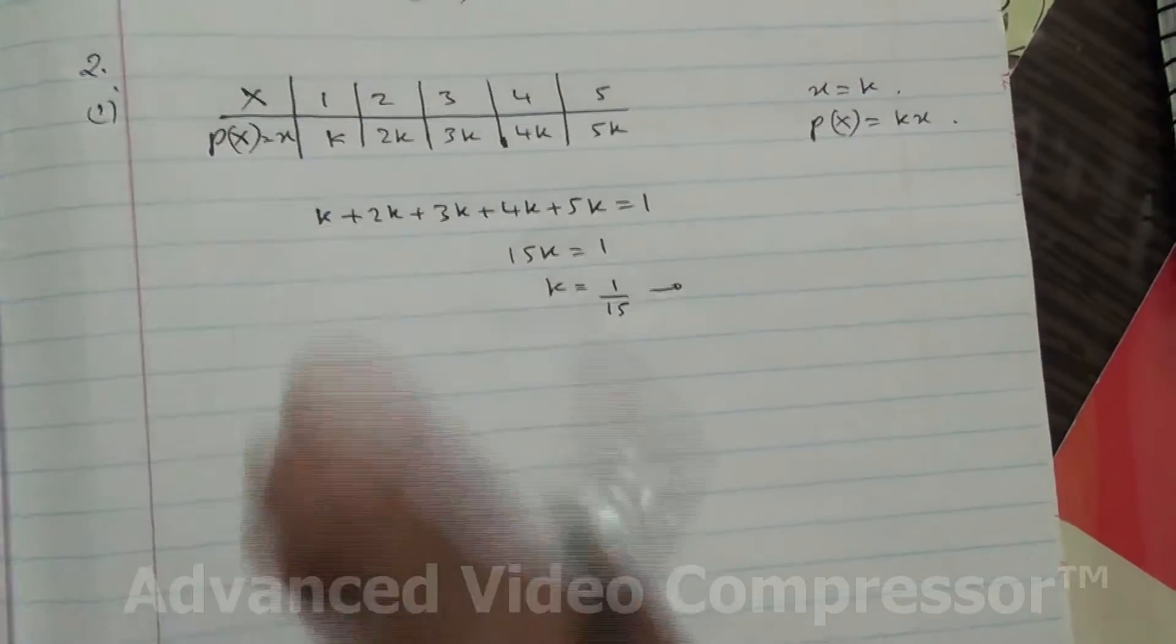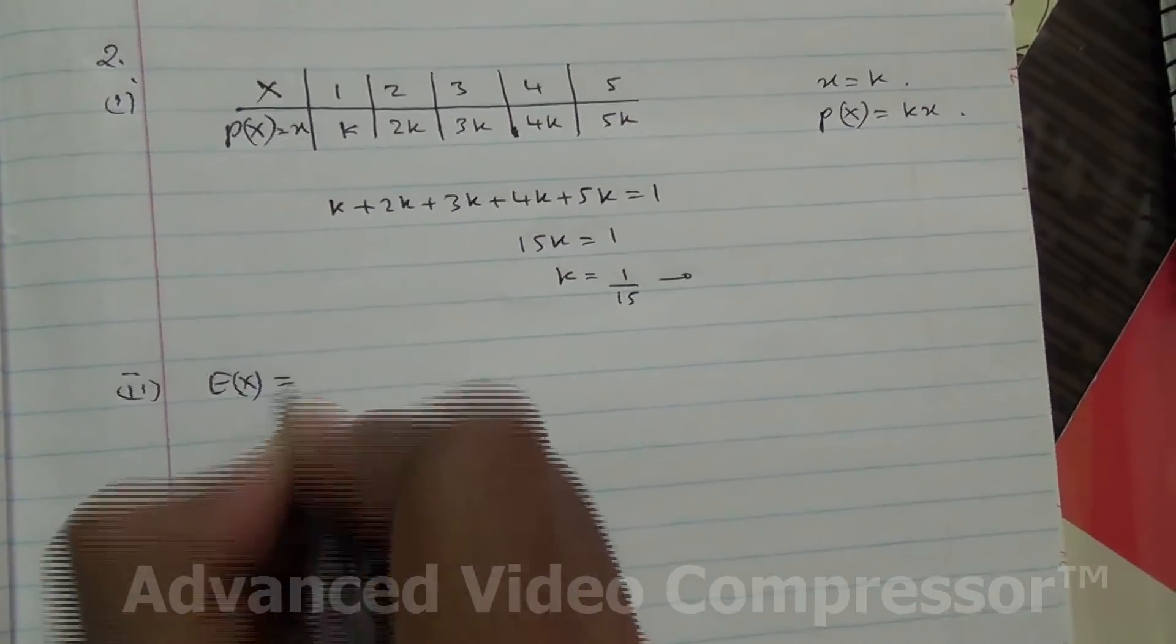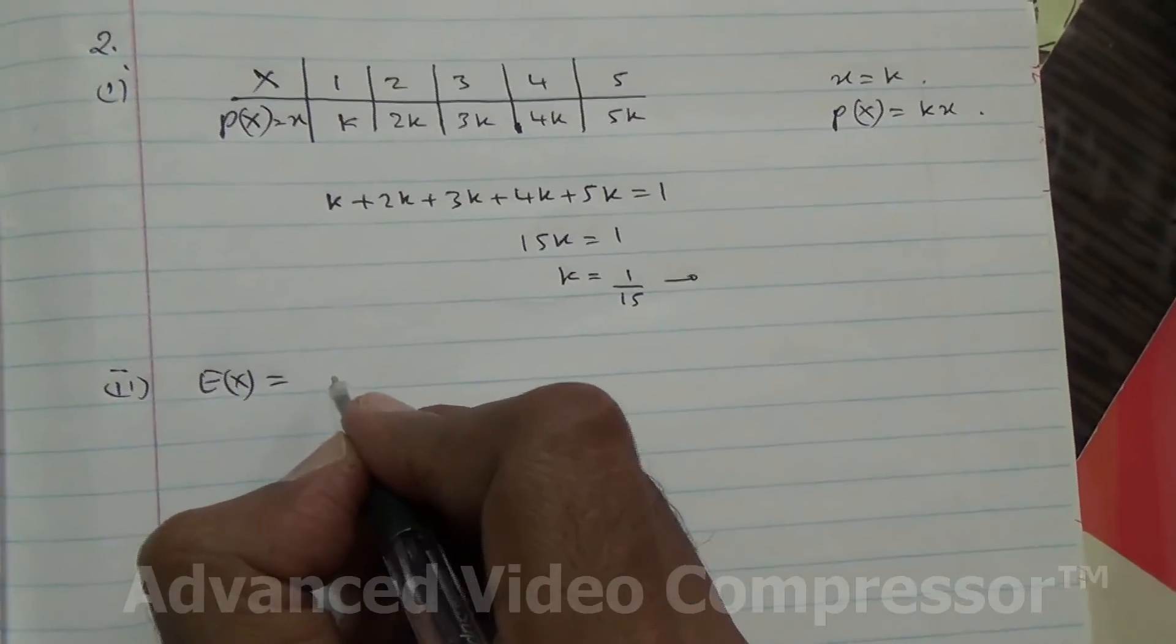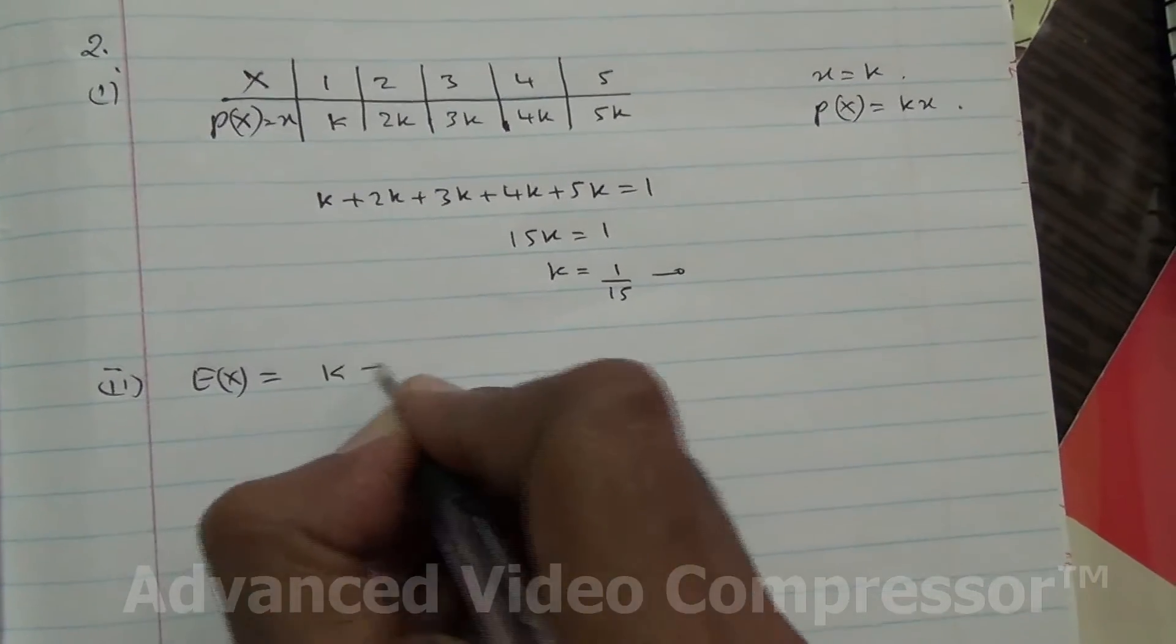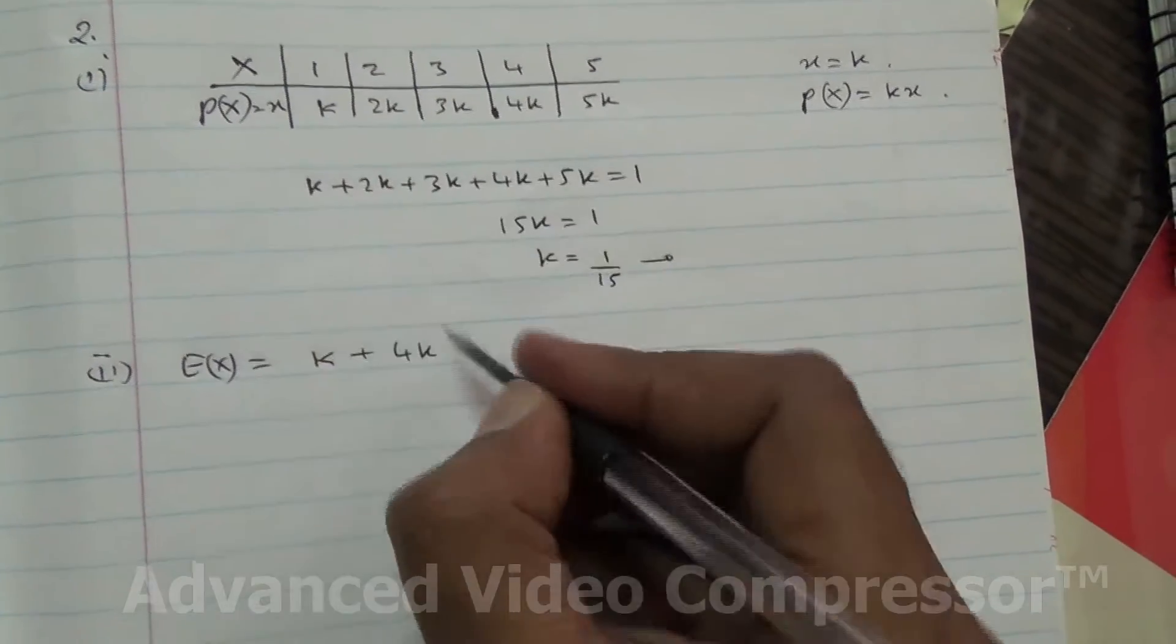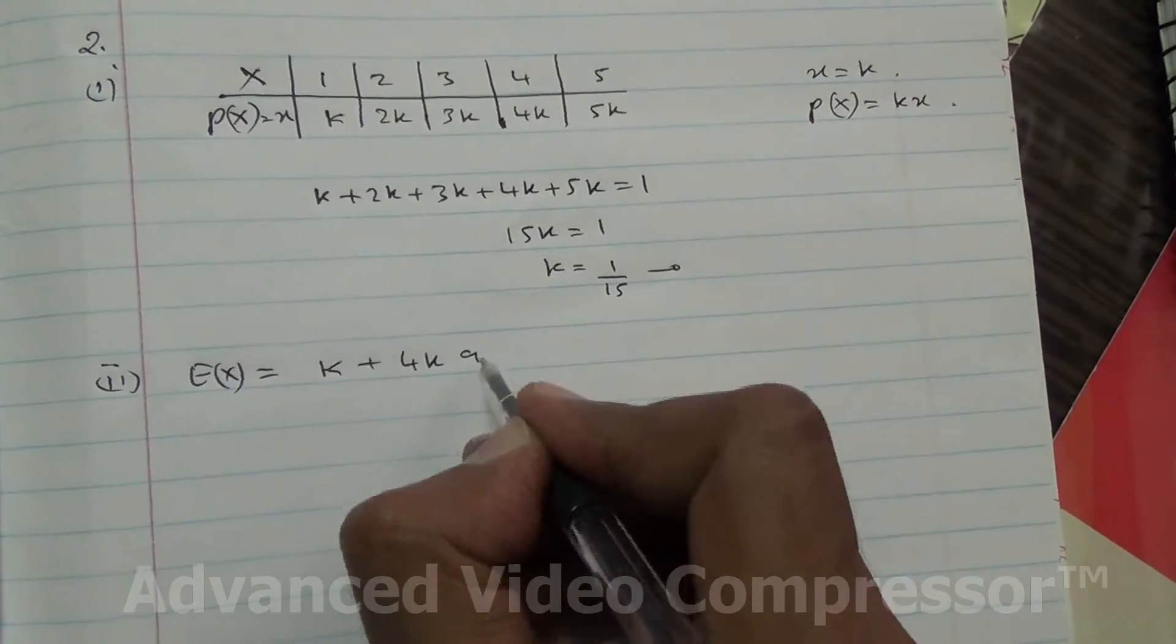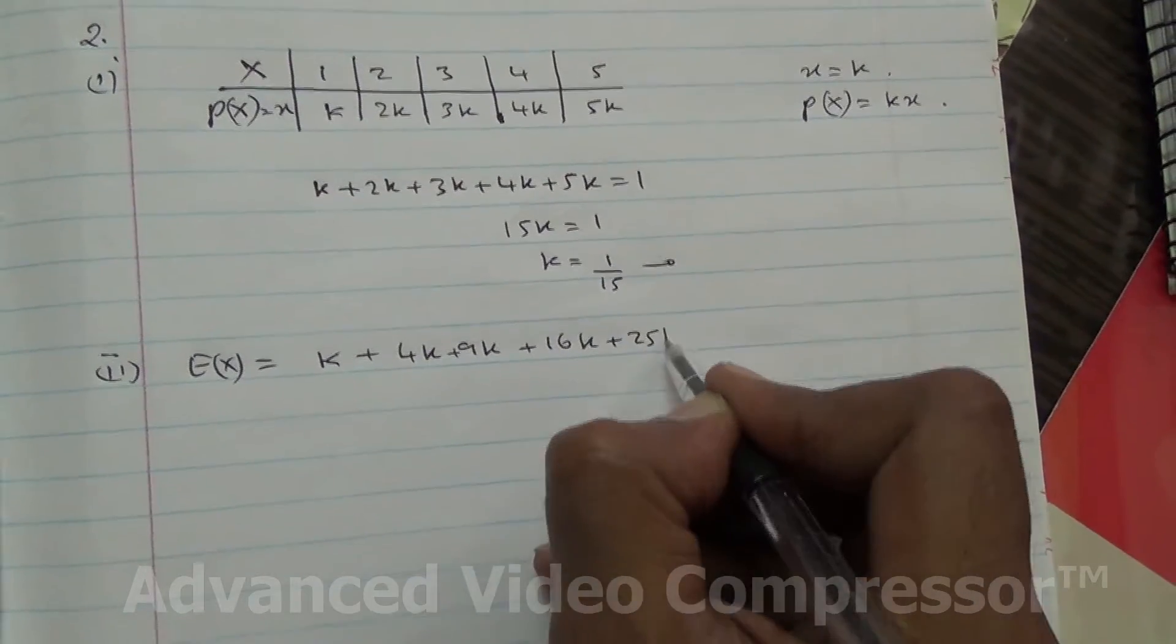Now, for the second part, we need to find E(X). What is E(X)? E(X) is 1 times k, which is k, plus 2 times 2k, which is 4k. 3 times 3k is 9k plus 16k plus 25k.